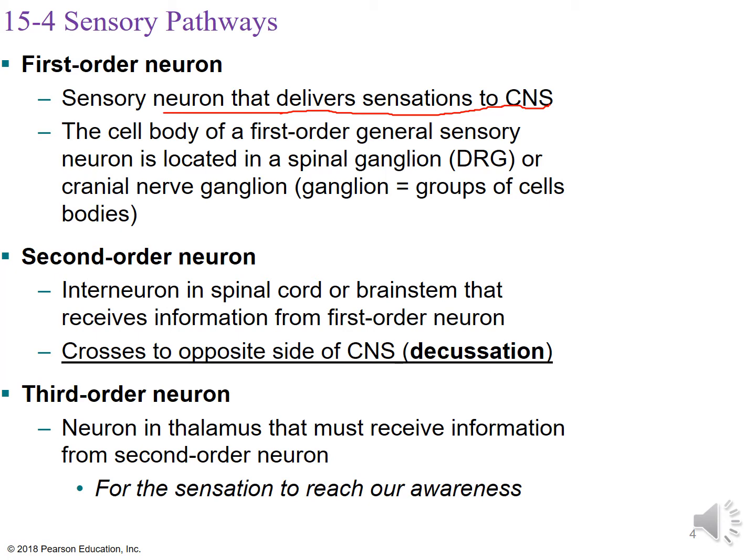The cell body of a first order neuron is going to be either in a spinal ganglion — that's the dorsal root ganglion on your drawing — or the cranial nerve ganglion. Remember, ganglion just means a group of cell bodies. We've already seen the spinal ganglion and we'll be looking at some cranial nerve ganglions a little later on.